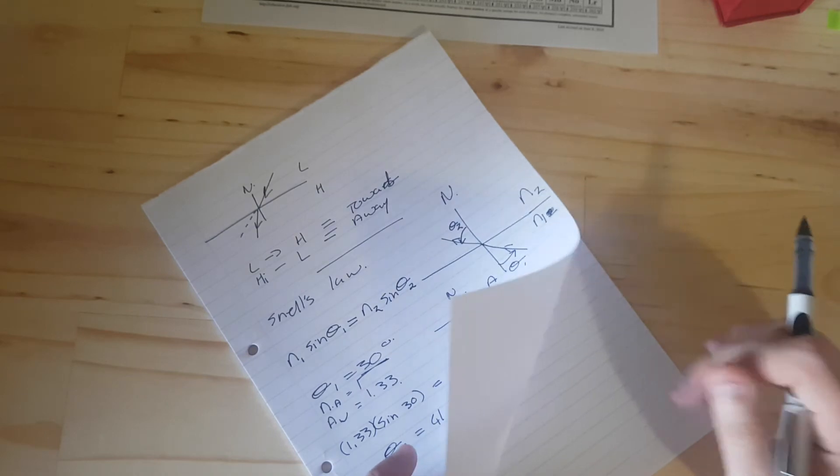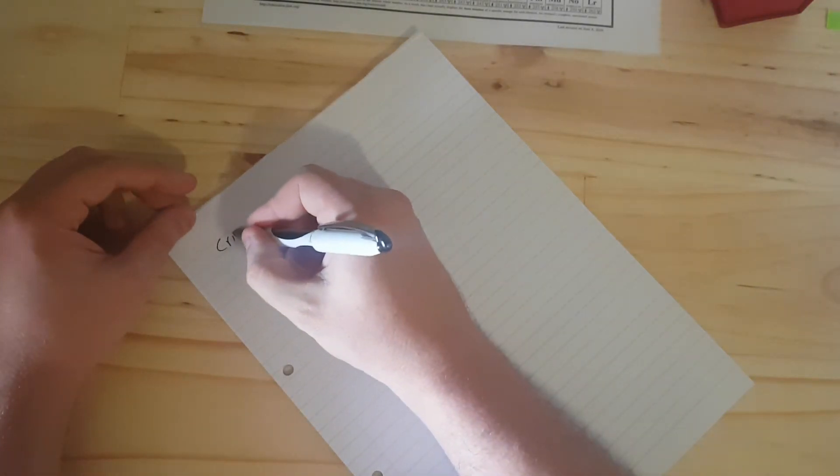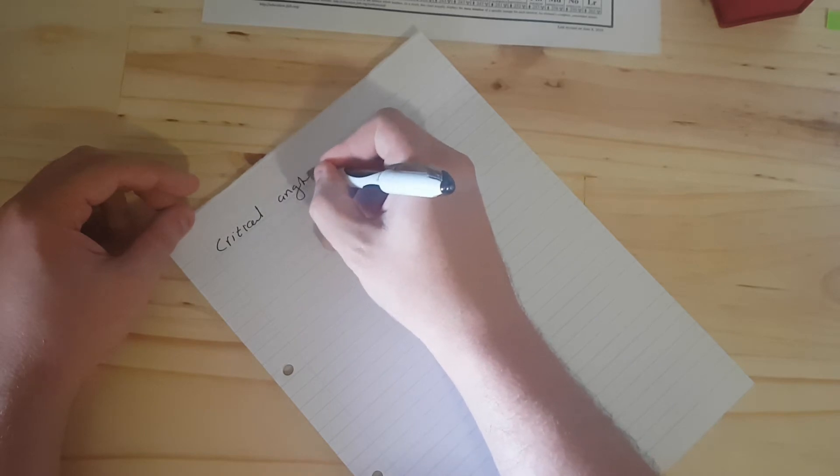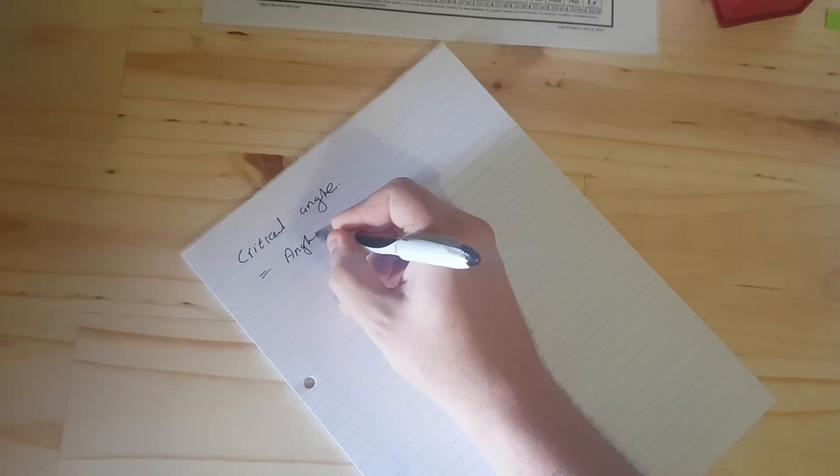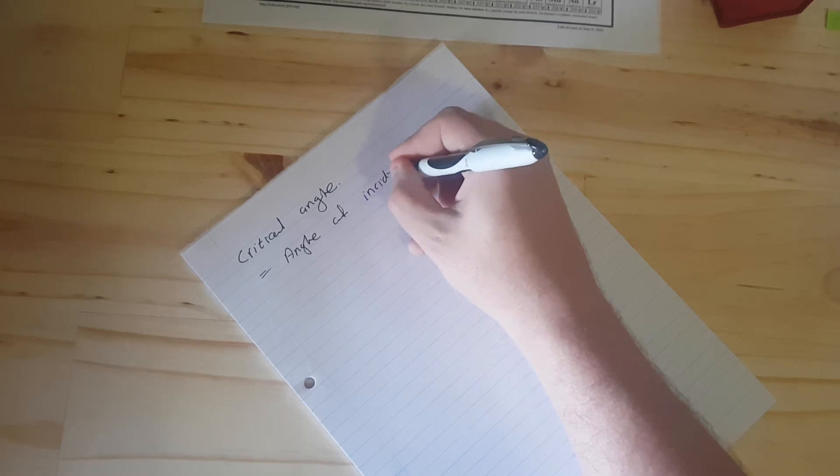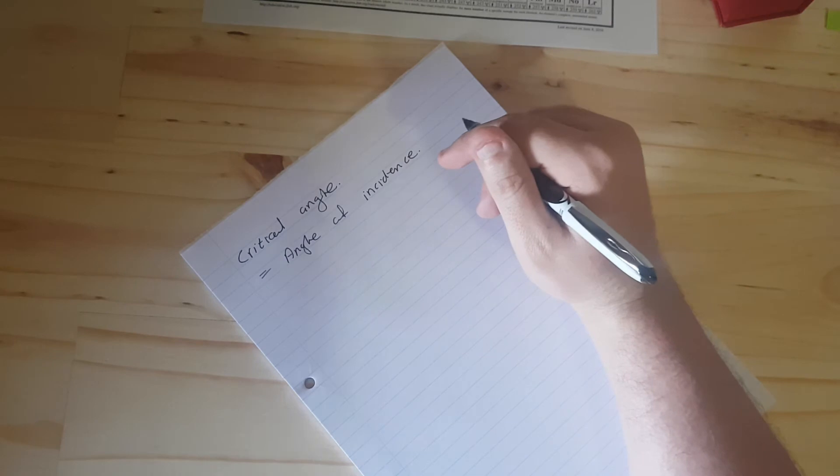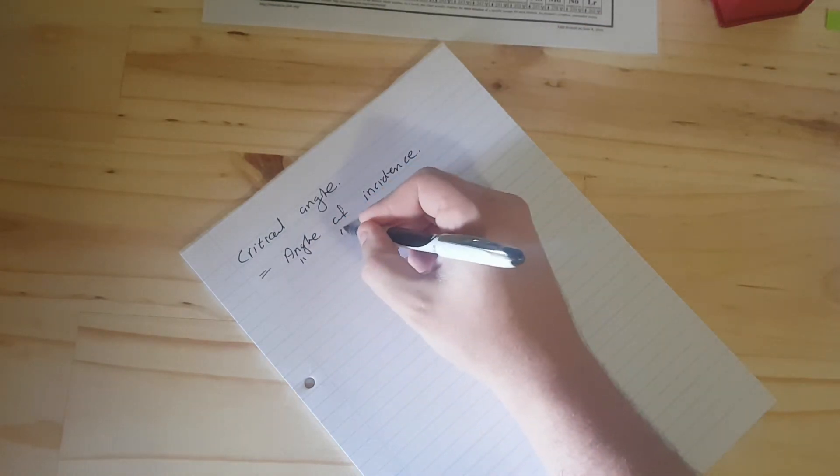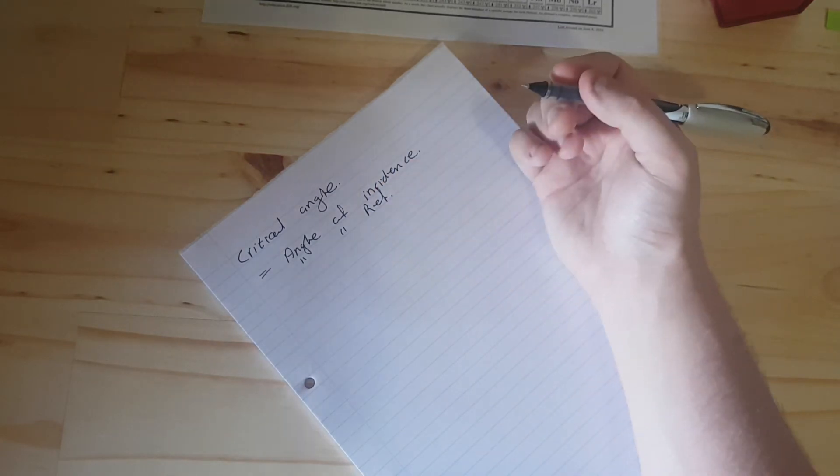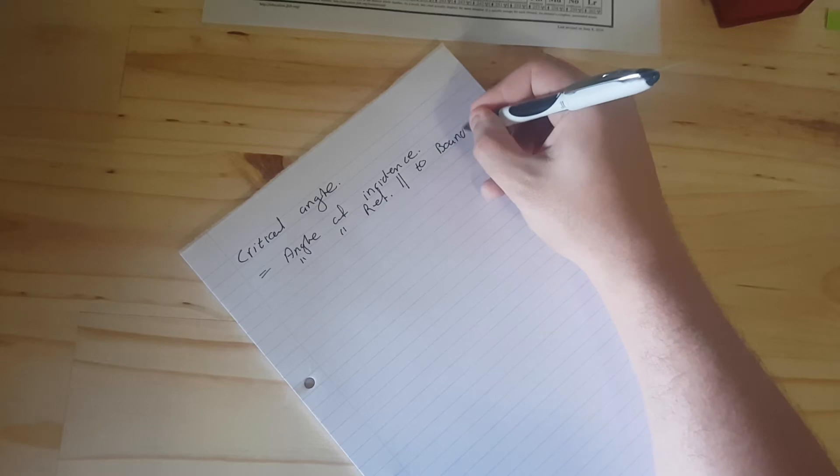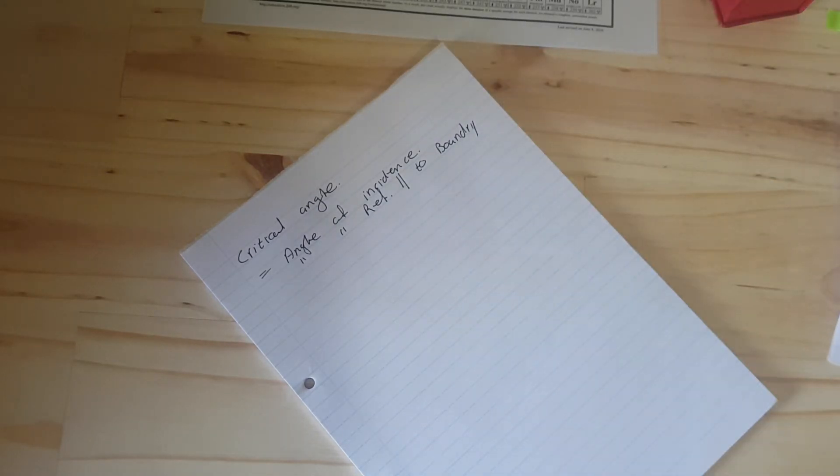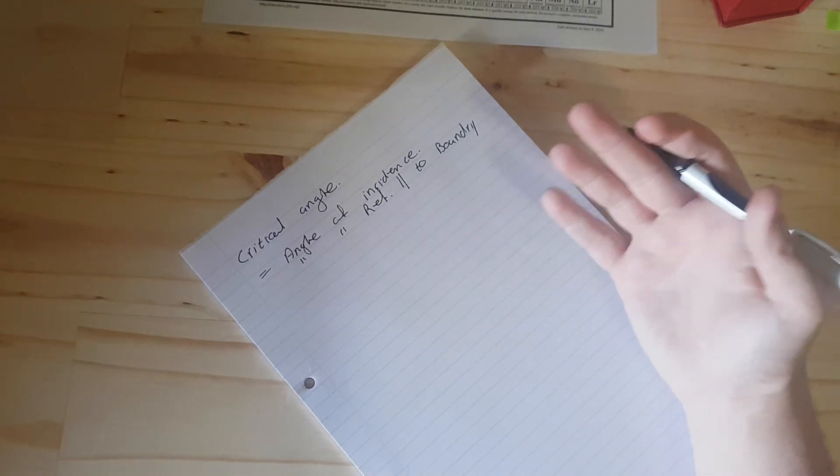There is one final thing that we have left to speak of today, and that is the notion of a critical angle. Critical angle, it is defined: the critical angle is equal to the angle of incidence of a light ray that provides an angle of refraction that is parallel to the boundary between your two media.